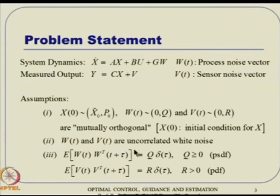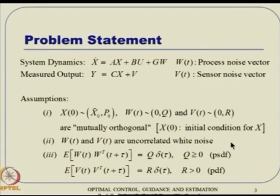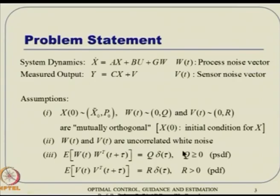There are two important assumptions here. First, x(0), w(t) and v(t) are mutually orthogonal — any combination of x(0) and w, w and v, or v and x(0) gives zero cross-correlation. Second, w and v are uncorrelated white noise. So to summarize, we have three randomly varying quantities — initial condition, w, and v — characterized by their mean and covariance, all mutually orthogonal, and w(t), v(t) are uncorrelated white noise. These two assumptions are very important for the derivation.